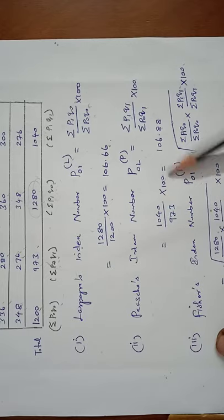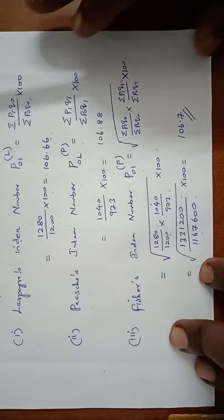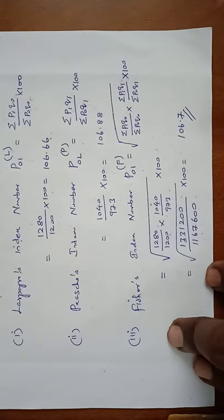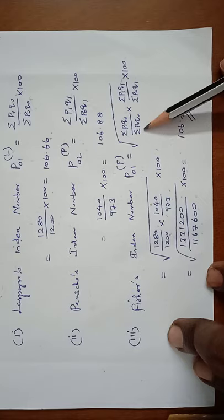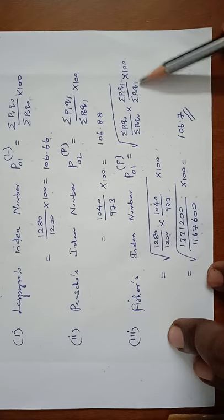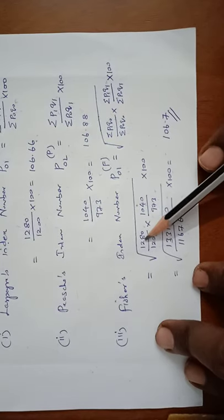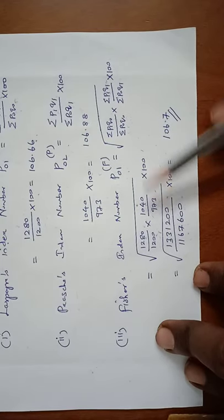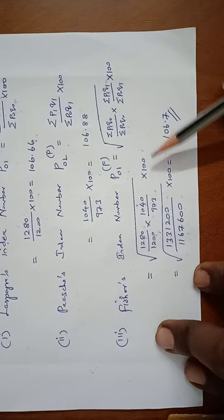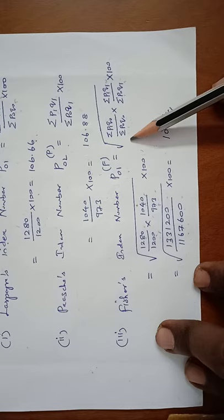Last formula: Fisher's Ideal index number. P01 Fisher equals square root of sigma P1Q0 by P0Q0 times sigma P1Q1 by P0Q1 into 100. This is the formula. Square root of 1280 by 1200 times 1040 by 973 into 100.